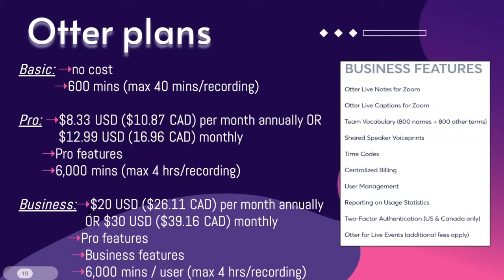The Business plan is $20 in the U.S., or $30 depending on the plan you choose. In Canada it is $20.11 or $39.16, also depending on the plan, and is billed per month. The Business plan includes the Pro features and Business features, 6,000 minutes per user, and a maximum of four hours per recording.